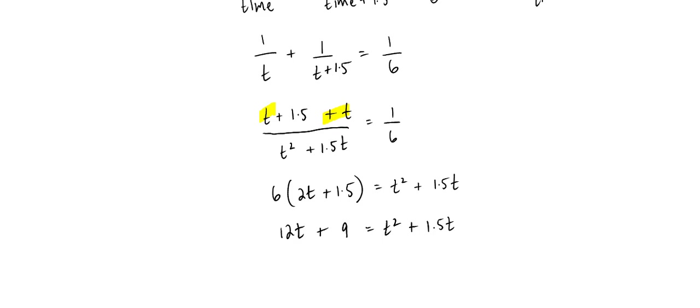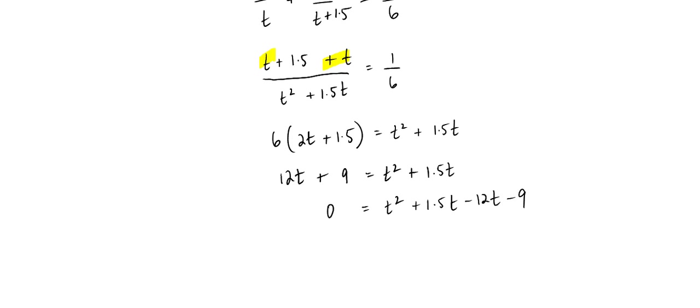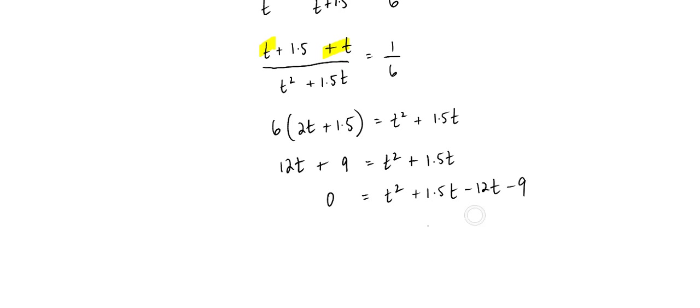Let's bring every term to one side. Let's bring all these terms to the other side so we end up with zero equals T squared. This looks like a quadratic function. Quadratic functions are tricky to solve. Let's combine these first: T squared minus 10.5T minus 9.